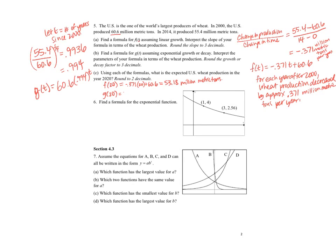And for G of 20, I'm going to do 60.6 times 0.994 to the 20th. When I do that, I get 53.195, so that's 53.20 million metric tons.